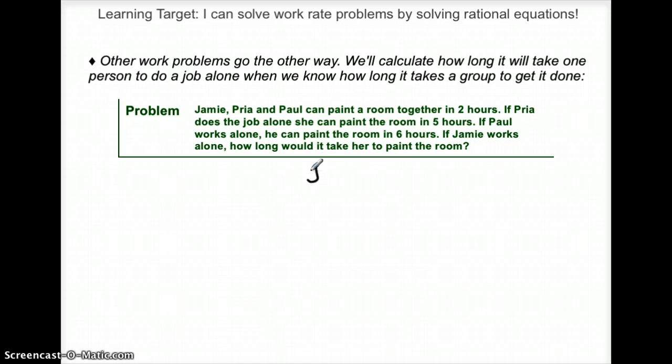So it seems like I know a combined rate based on that first sentence. Jamie plus Priya plus Paul have a combined rate of they can paint a room, so the work is one room getting painted in the time 2 hours. This is the combined work rate of these three people.